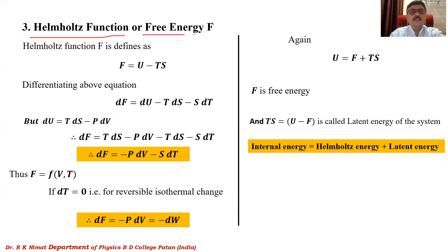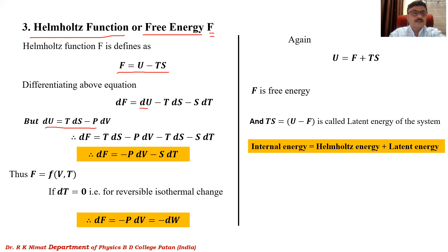The third thermodynamic function is the Helmholtz function, also called Helmholtz free energy, represented by the letter F. It is defined as F = U − TS. Differentiating, we get dF = dU − T dS − S dT. Substituting dU = T dS − P dV, the +T dS and −T dS cancel, giving dF = −P dV − S dT. Therefore, Helmholtz free energy is a function of volume and temperature: F = f(V, T).